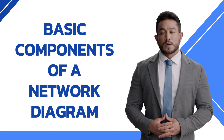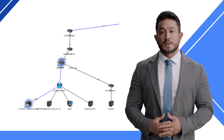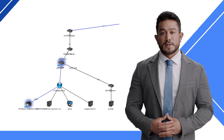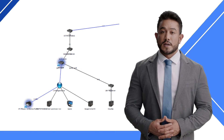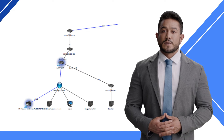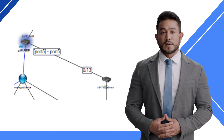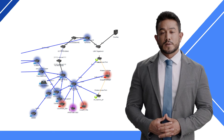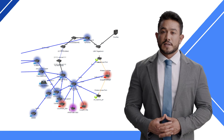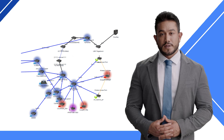Before drawing a network diagram, it's essential to understand its basic components. Nodes and devices refer to the various components of a network, such as routers, switches, hubs, servers, and workstations — these are represented by different shapes. Connections and links refer to the physical or logical connections between different components, represented by lines. Network topologies refer to the different ways nodes and devices are connected; the most common layouts are star, mesh, ring, and bus.